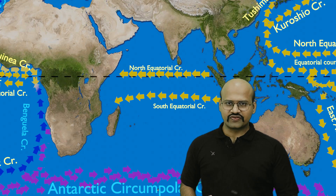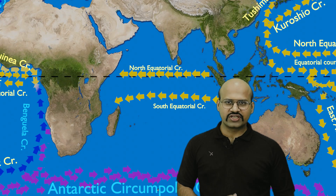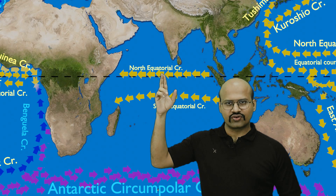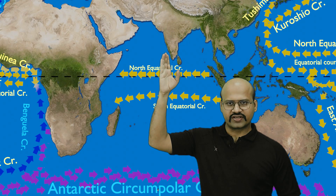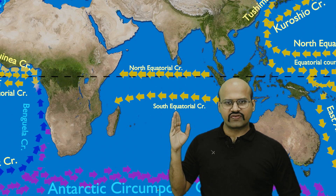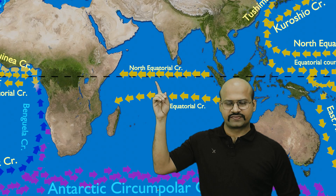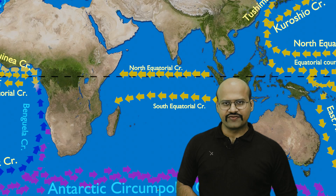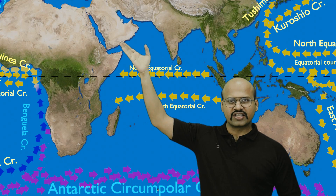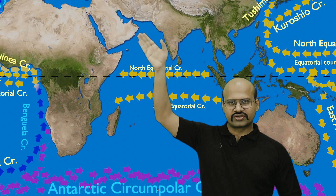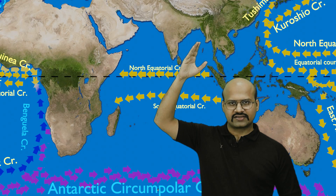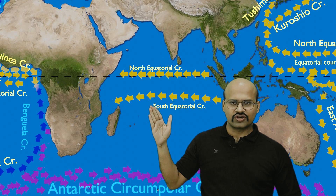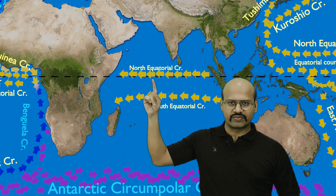In our previous videos about Pacific Ocean currents and Atlantic Ocean currents, the north equatorial current was a little north of the equator while the south equatorial current was close to the equator. But in the Indian Ocean things are reversed. The northern part of the Indian Ocean is enclosed by land mass, so the north equatorial current flows very close to the equator while the south equatorial current is farther from it.